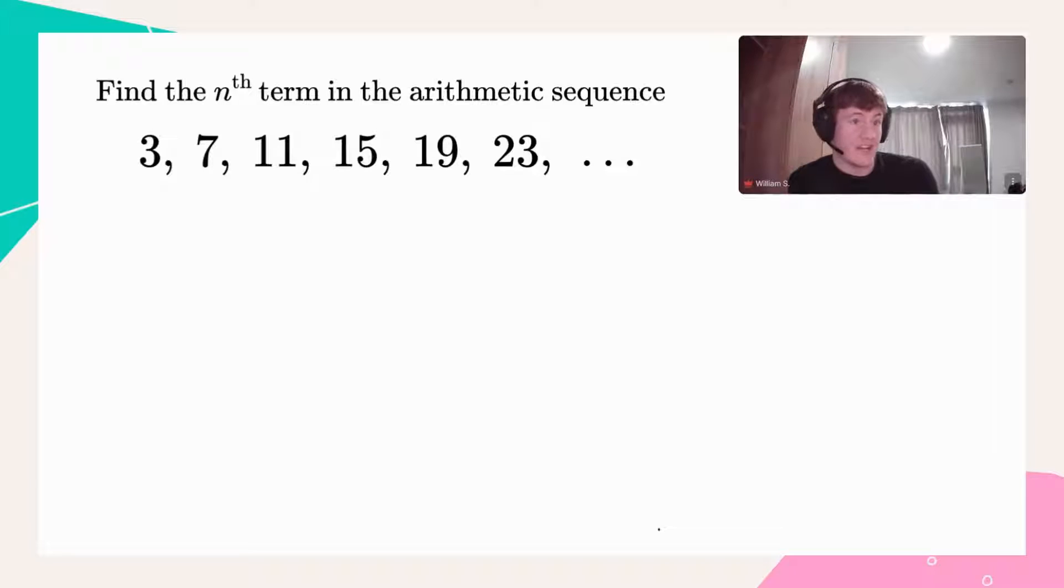Well, in general, for any arithmetic sequence, the nth term, which I'll denote u_n, is given by a plus (n minus one) times d, where a is the first term and d is the common difference.